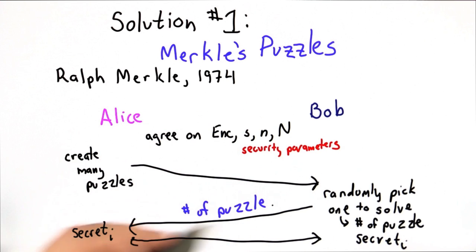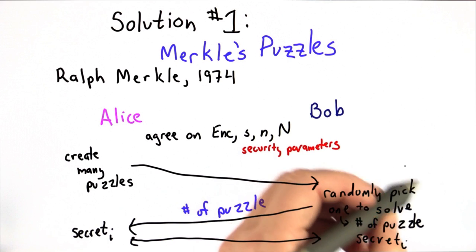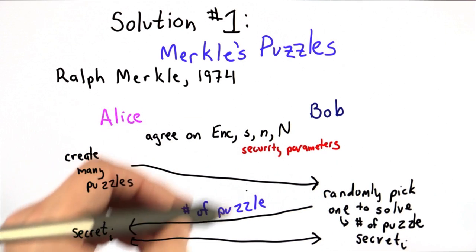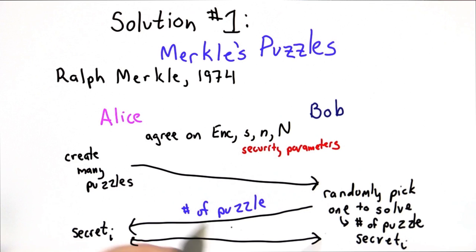The reason that this gives you a way to establish a key is because Bob's randomly picking one puzzle to solve, whereas an attacker would have to solve many puzzles before they could get the one that Bob actually solved.